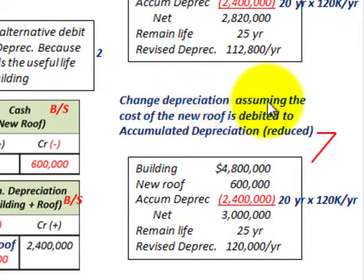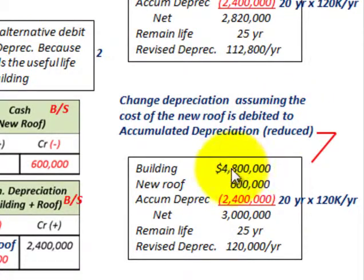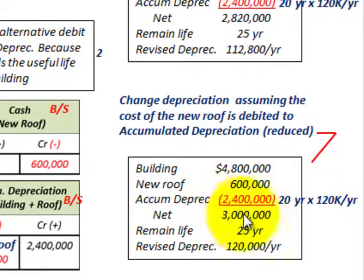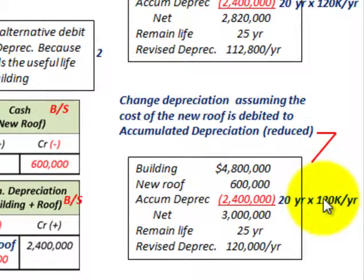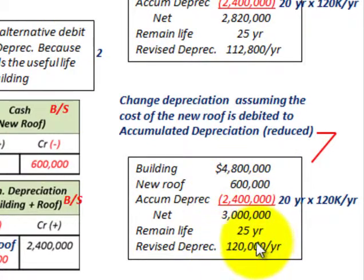For the alternative method — where the new roof cost is debited to the accumulated depreciation account — we take the building cost of $4,800,000, add the new roof cost of $600,000, and subtract accumulated depreciation of $2,400,000, giving us a net amount of $3,000,000. Divided by the remaining life of 25 years, we get a revised depreciation of $120,000 per year. This happens to match the original estimate, but that's coincidental — had the new roof cost been different, the revised depreciation would be different.